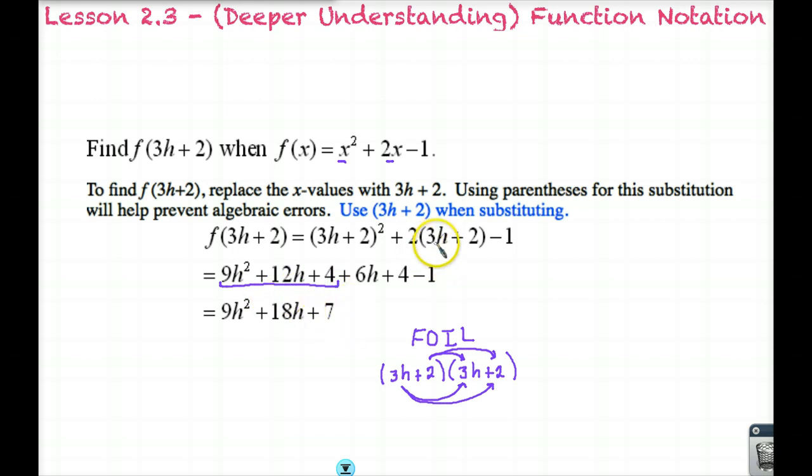In our second set of parentheses, we are distributing the 2 into the 3h to get 6h and 2 times 2 to get 4, then we have minus 1. Our final step is to combine like terms, which leaves us with our final answer. It's a little bit more math, but essentially it's the same concept. Whatever is in our function notation means that we are evaluating the function when x equals whatever is inside the parentheses.